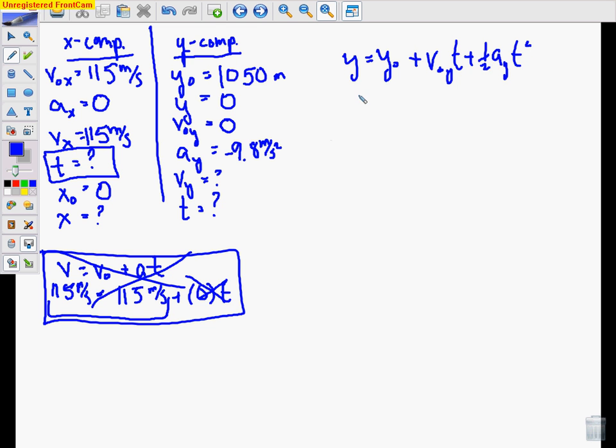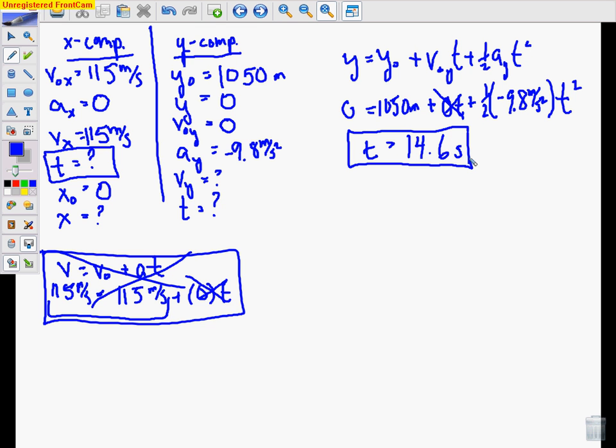Plugging in our numbers, Y is zero. Y naught was 1050. V naught Y is zero. So that means this is going to cancel out this whole term. And then AY was negative 9.8. So from here you can solve for T. And you should get T equals 14.6 seconds.